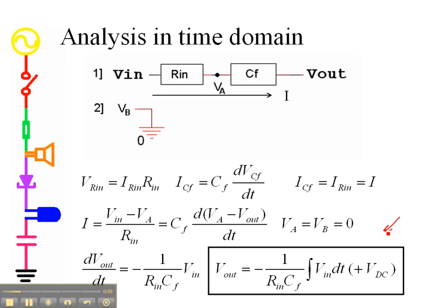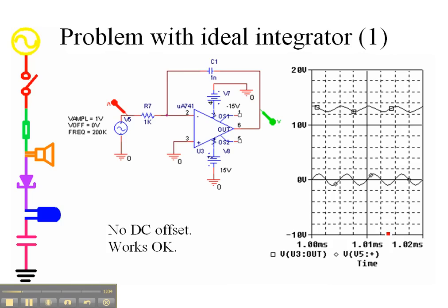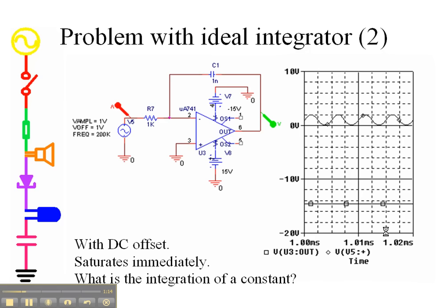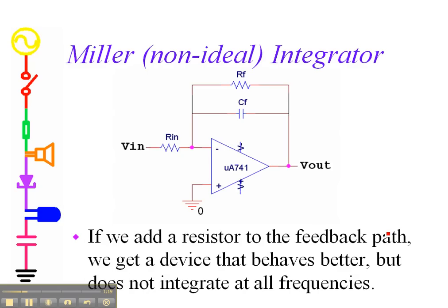In this case, there is a problem with the ideal integrator, and that is it works fine as long as there is no DC offset or noise or anything like that. But unfortunately, that always happens to be the case, so you need to have DC feedback.